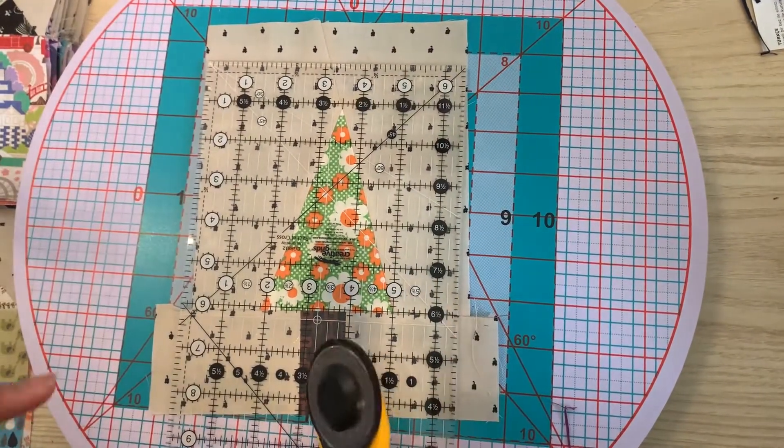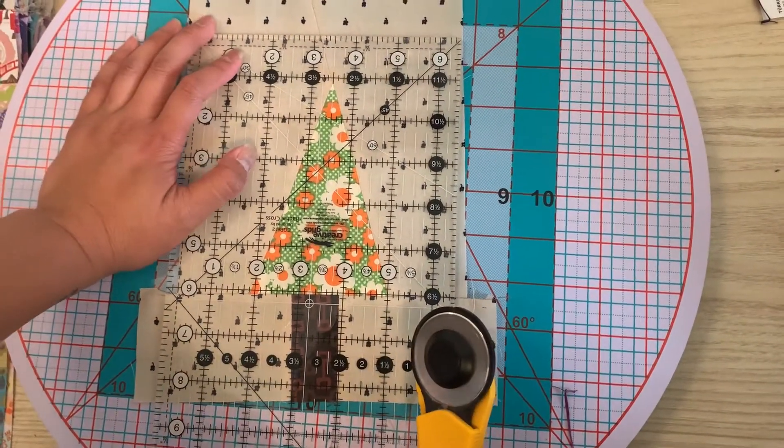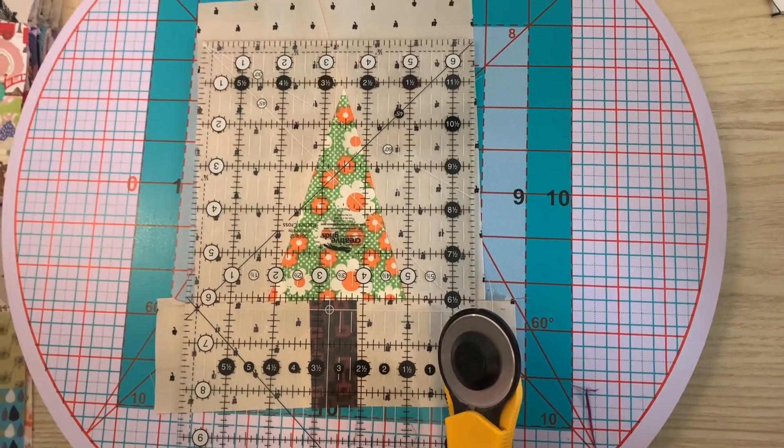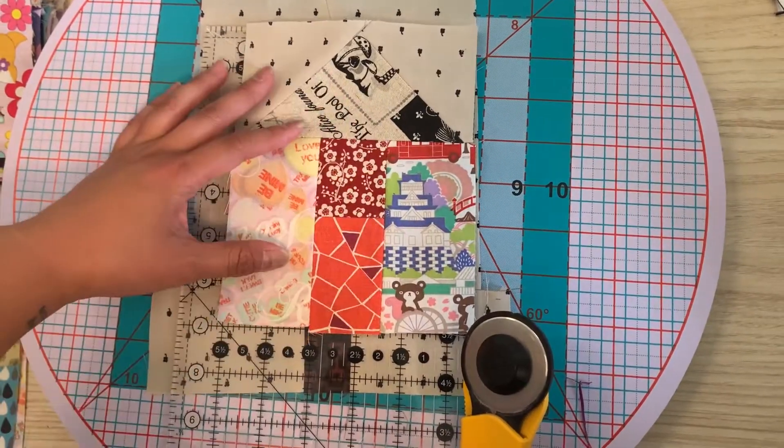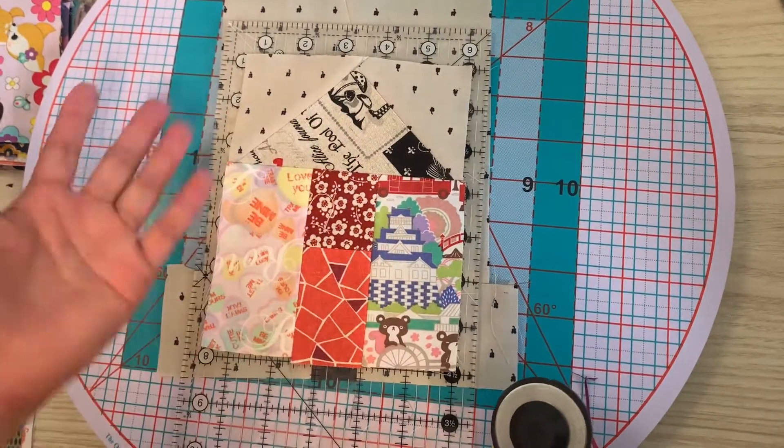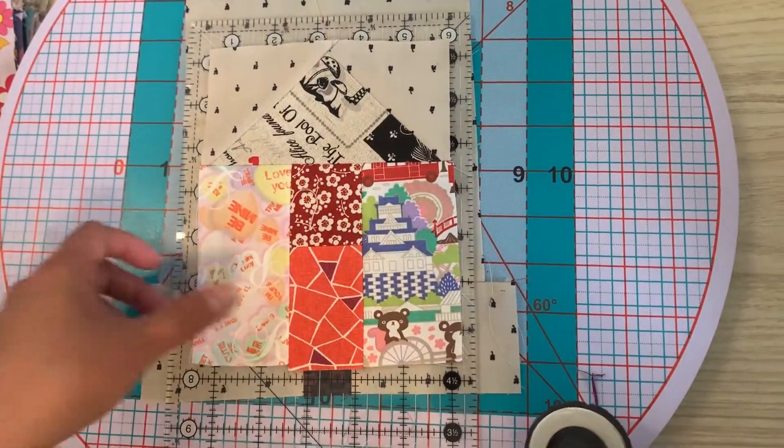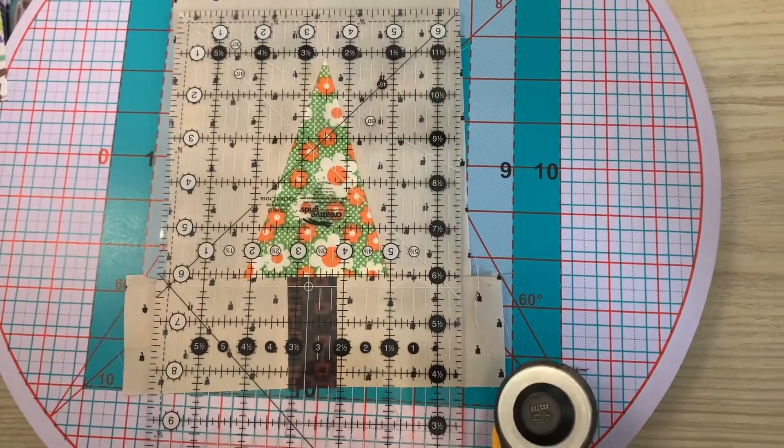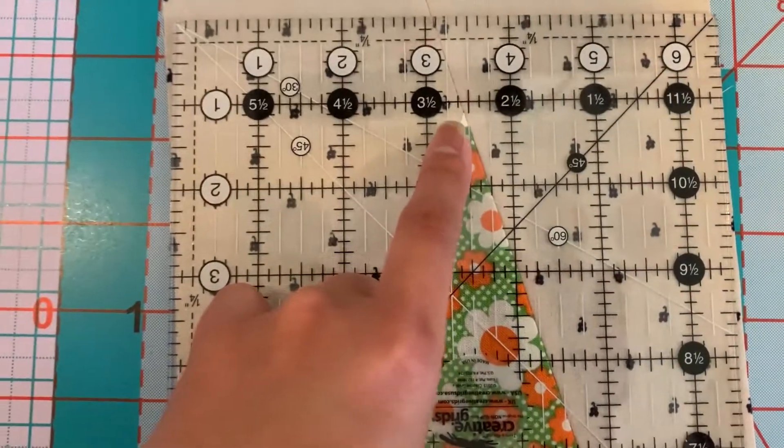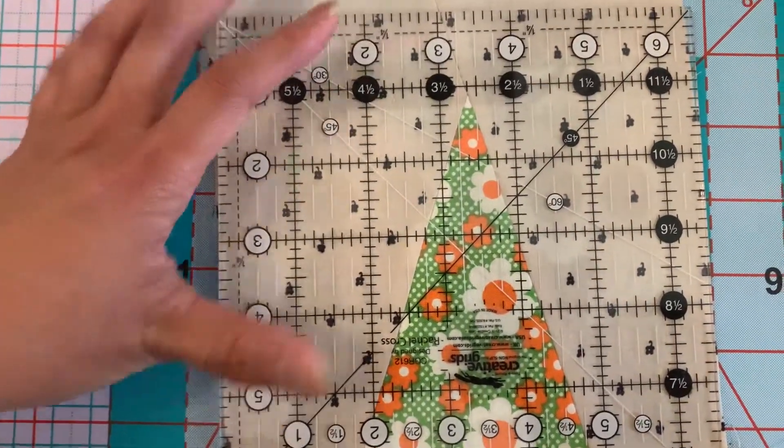Okay, so I think the hardest part on this block is just trimming and squaring it up. So what I'm going to do is line—so your block has to measure five and a half by seven. If you look at this, the house block, and you put it over your tree block, you have plenty of room to square it down. So what I do is I take my ruler and I'm lining that top of that tree with the two and three quarters mark.